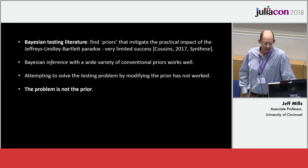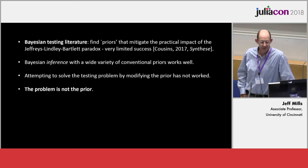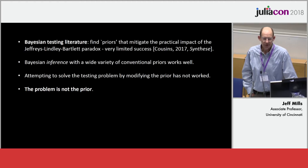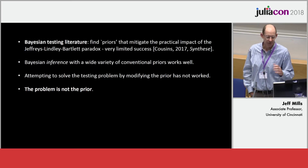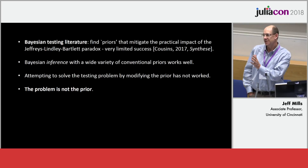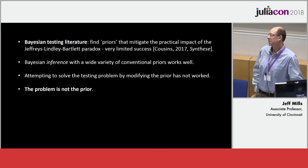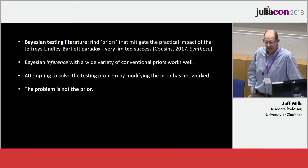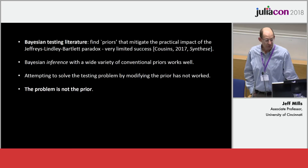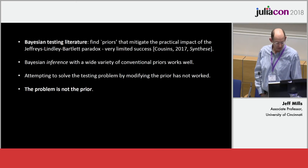There's a large literature on finding prior distributions that mitigate the Jeffreys-Lindley-Bartlett paradox, but with fairly limited success. You have to invent strange priors that don't really represent your prior information, and they change when you change the hypothesis — if you're testing theta equals zero you use one prior, and if you test theta equals one you need a different prior. And it's not the same prior you'd use for inference. So it seems the problem is not really the prior — we're barking up the wrong tree trying to find new priors.